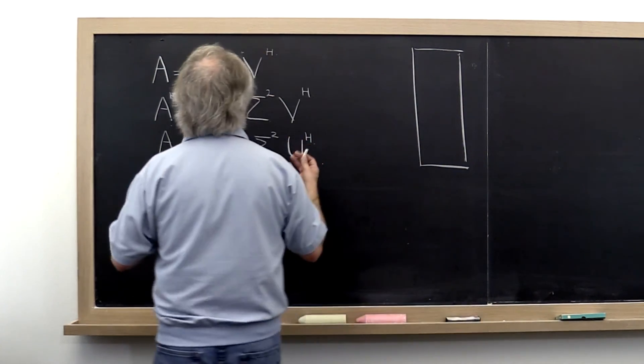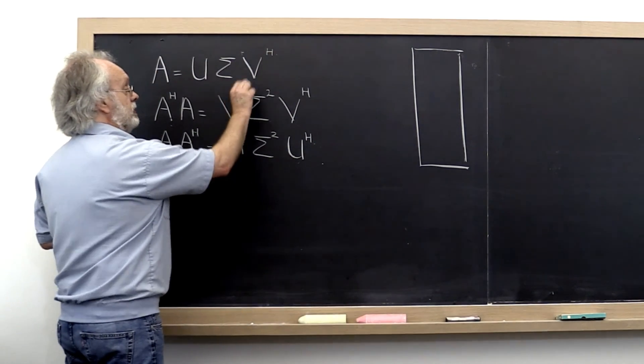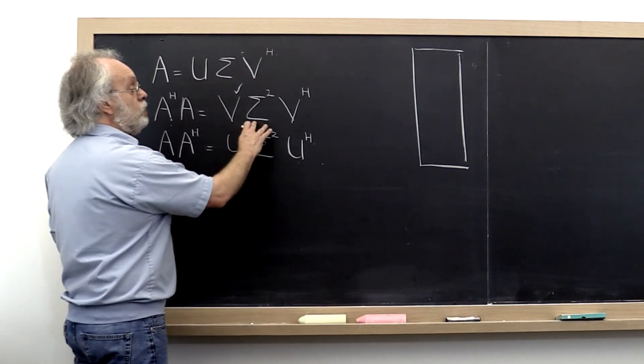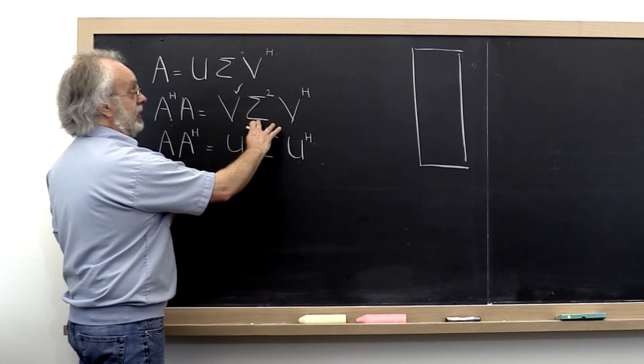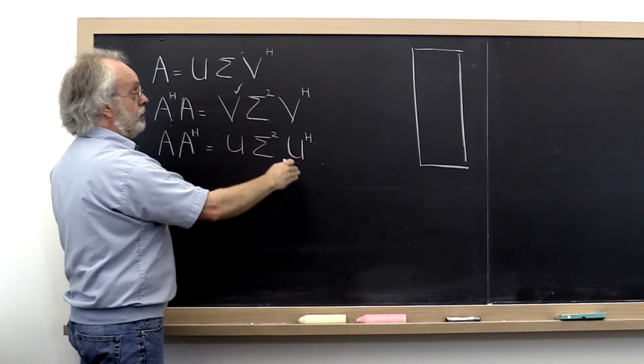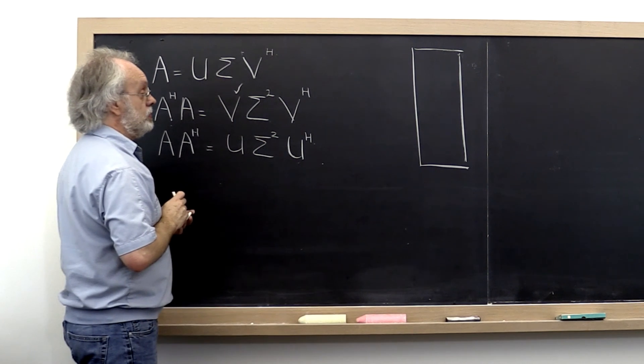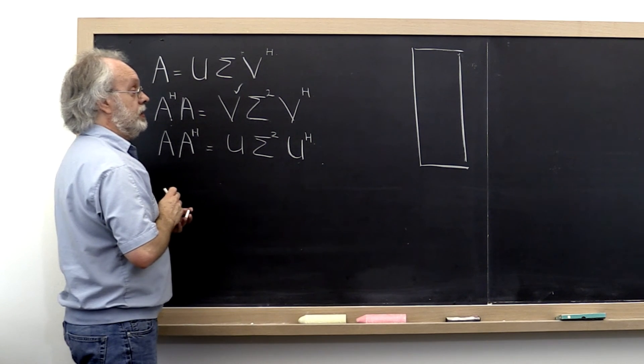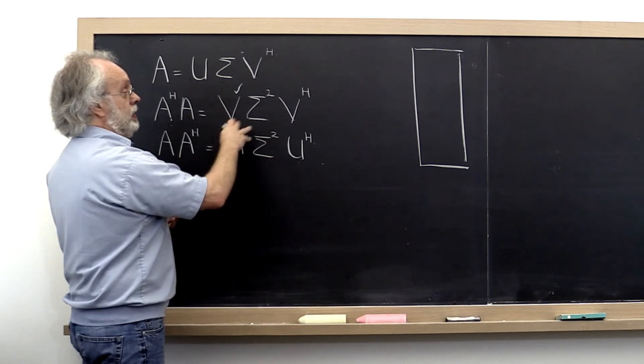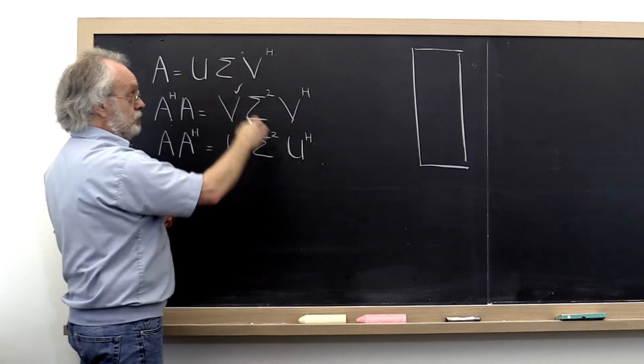We know what V is from the spectral decomposition. When we compute it, the eigenvalues don't necessarily come out from largest to smallest. So we may need to permute matrix Sigma to order its entries from largest to smallest.